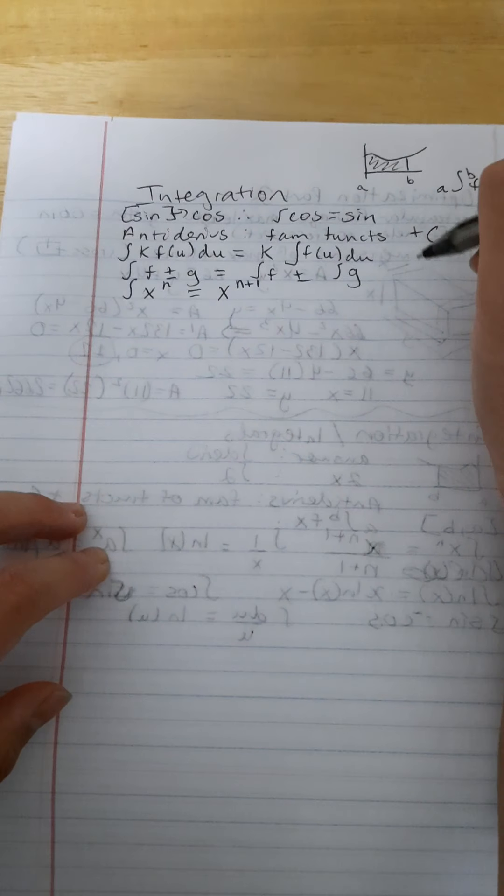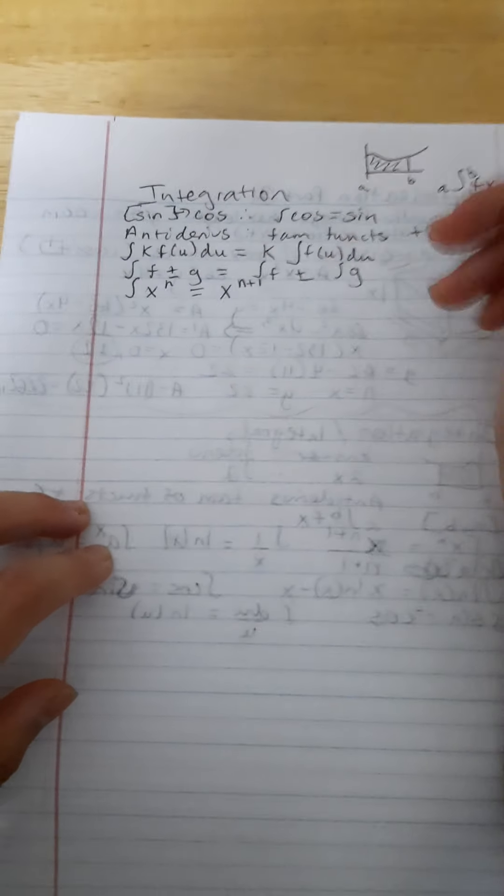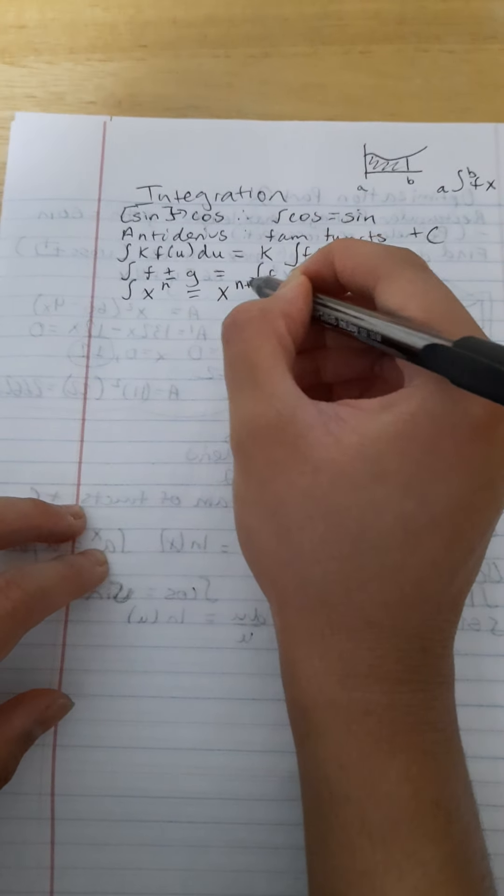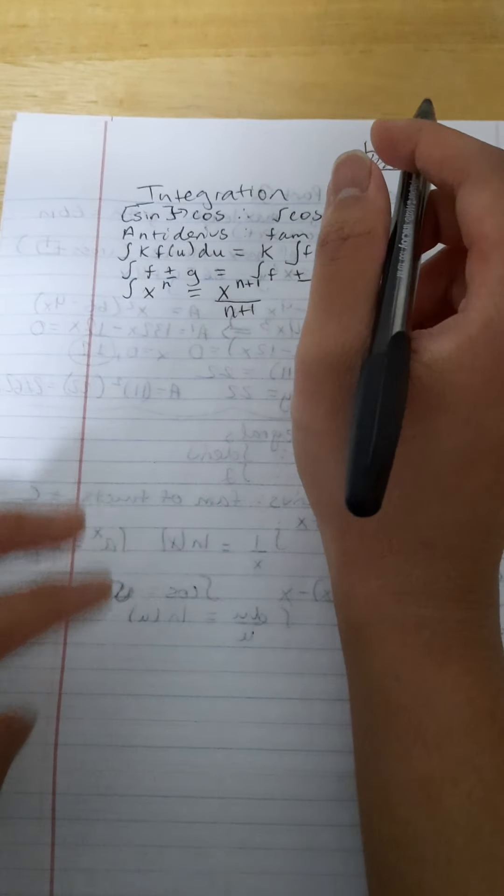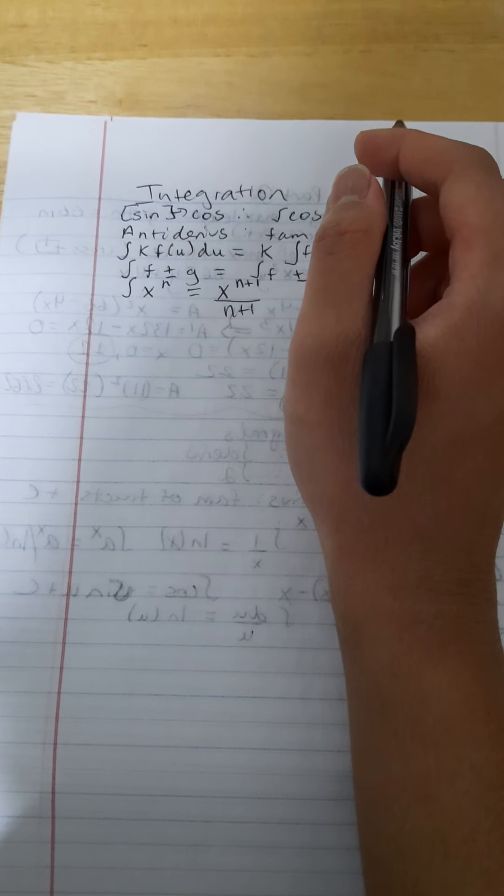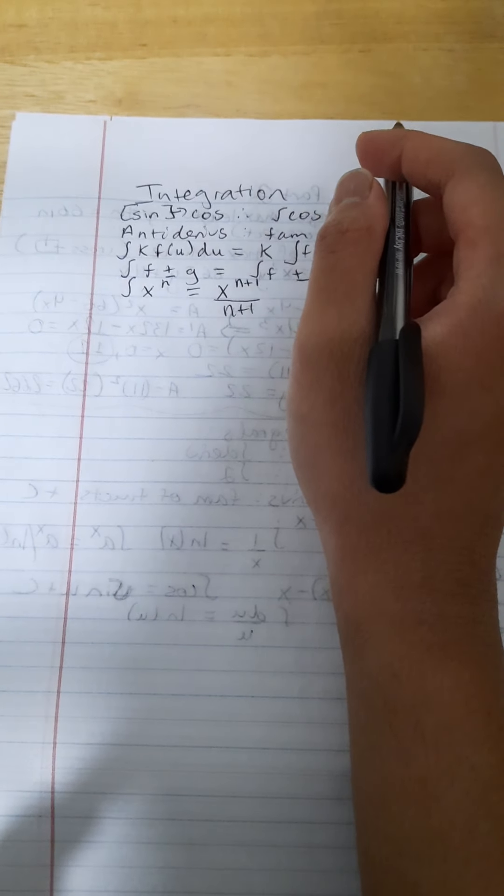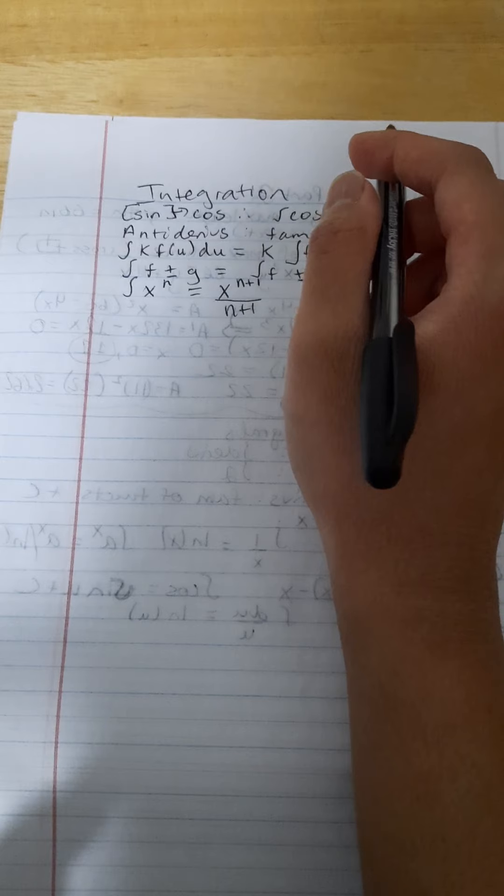Do you see how we add a plus 1 instead of subtracting it? In derivatives, when we had the power rule, we subtracted 1. But here, we're doing plus 1, and then that's going to be over n plus 1. Okay, so now we're going to look at some trig ones.